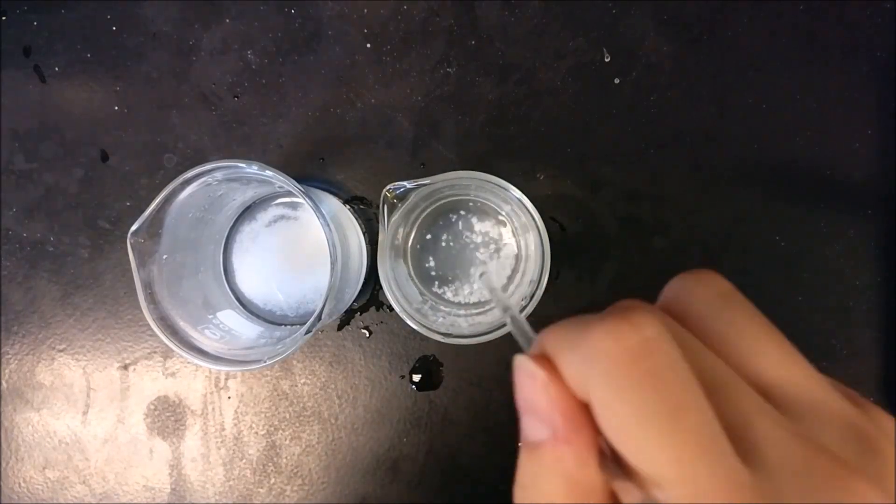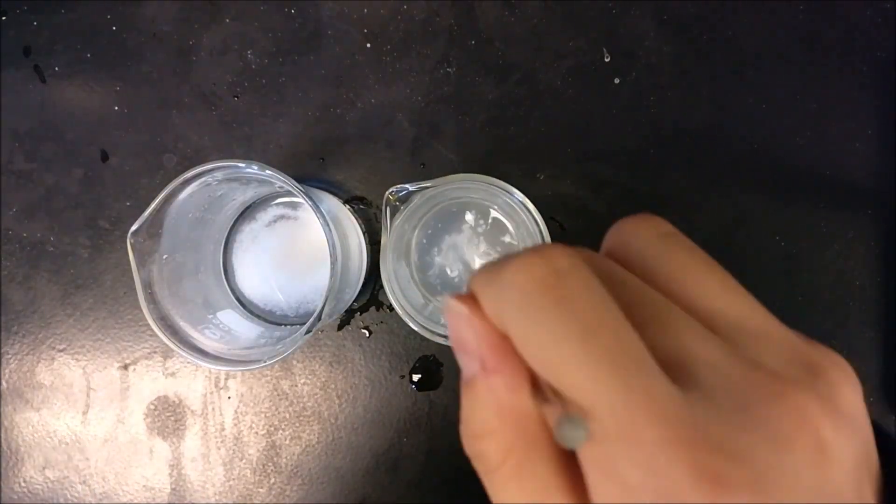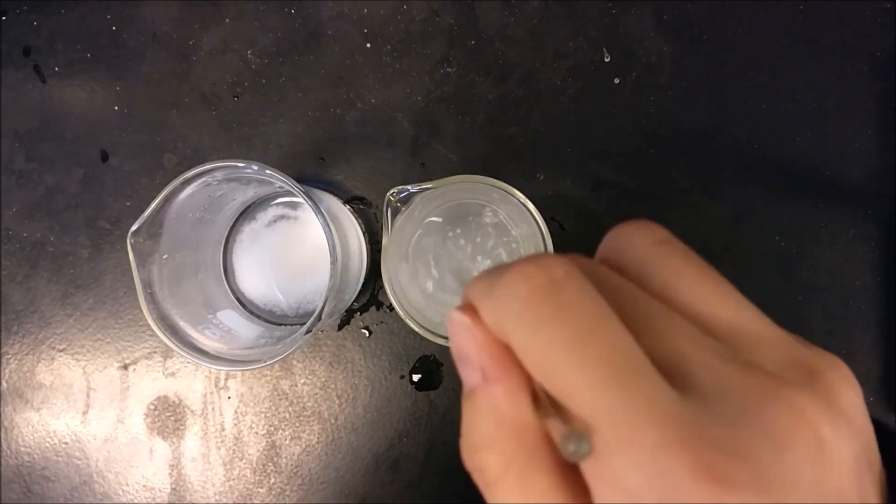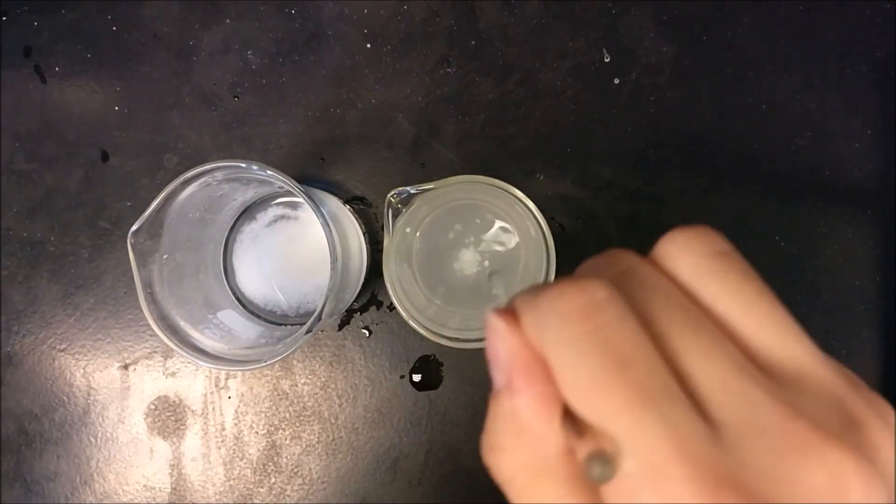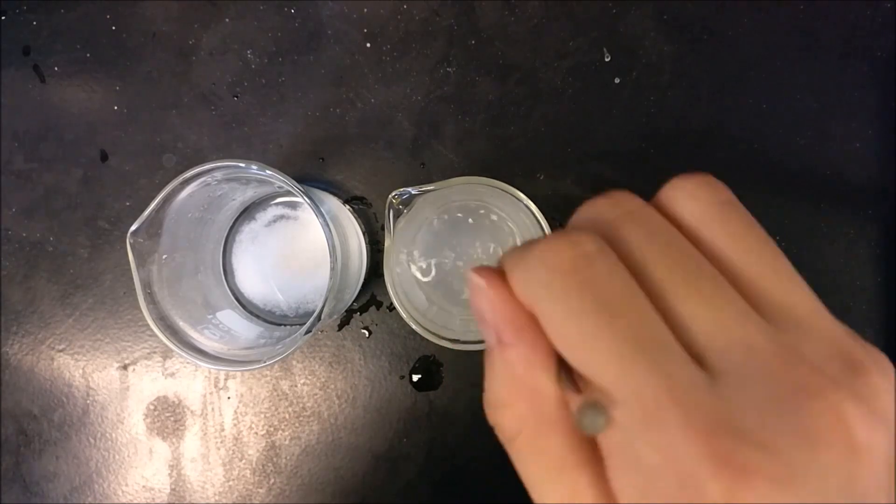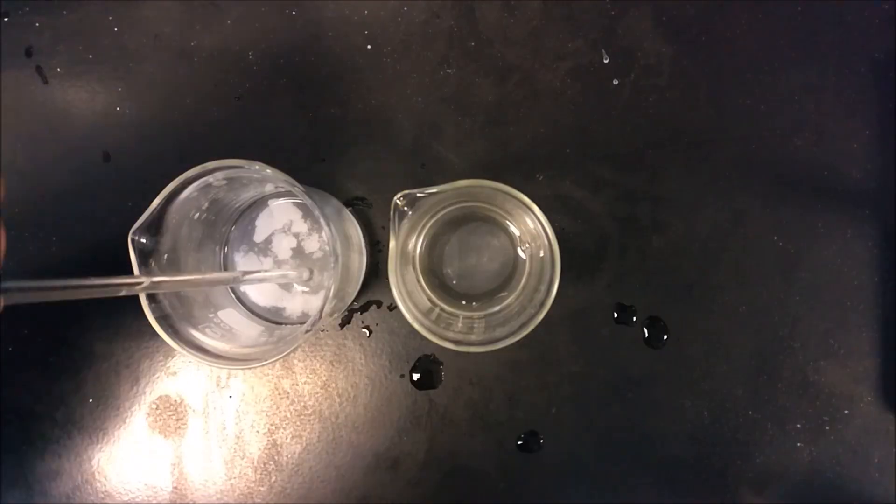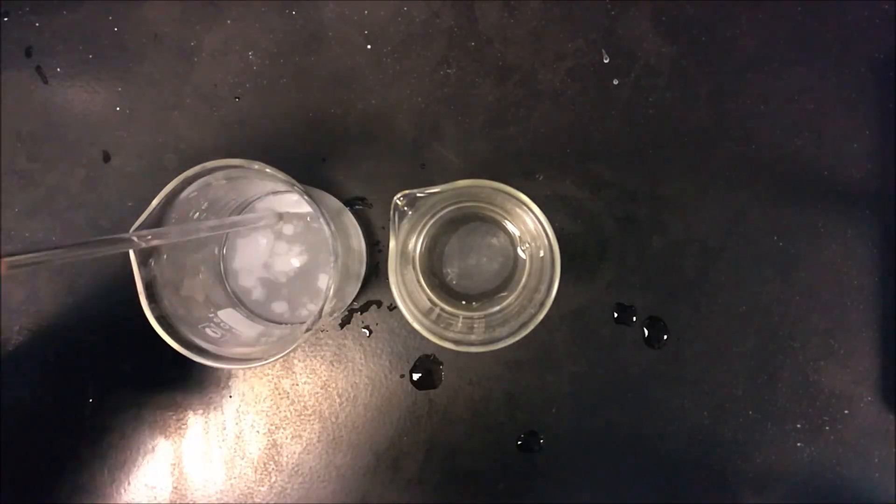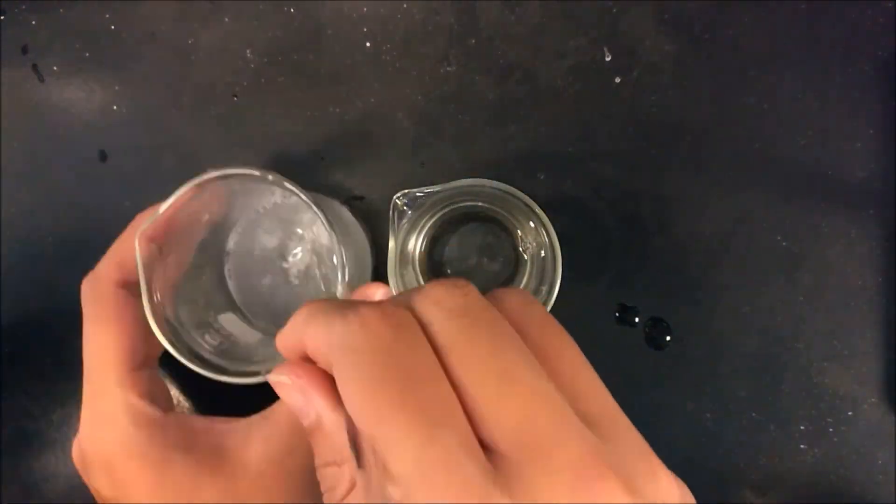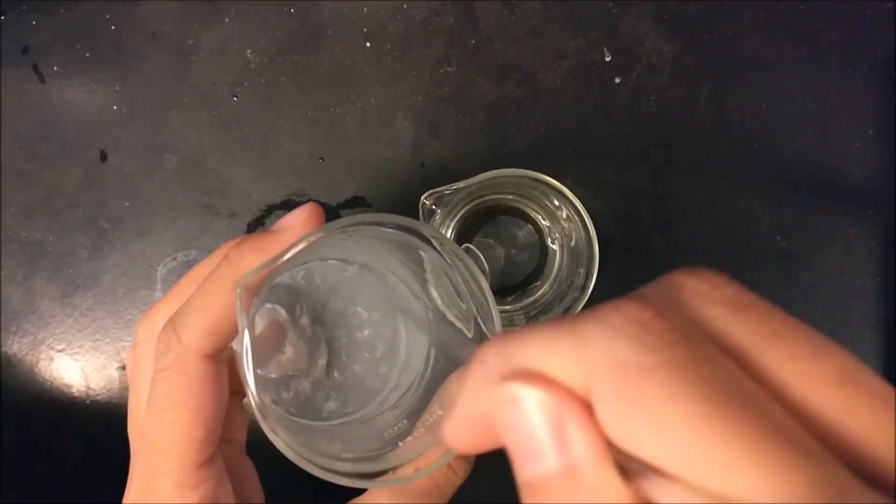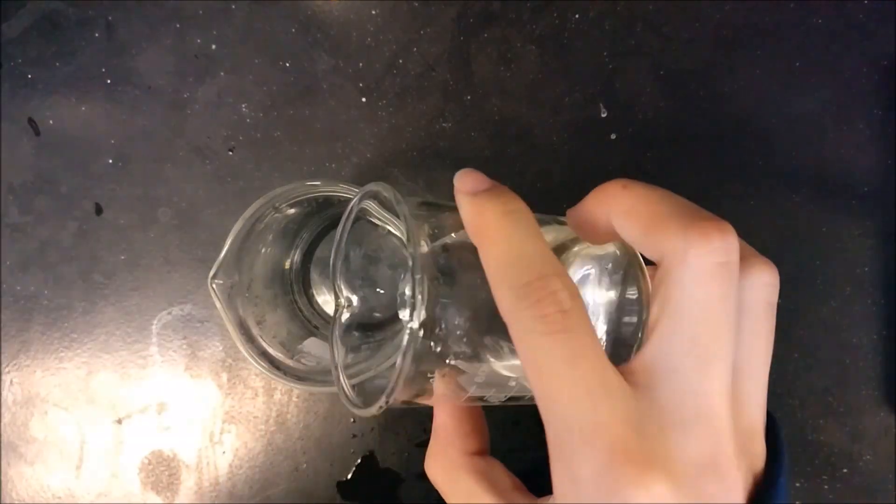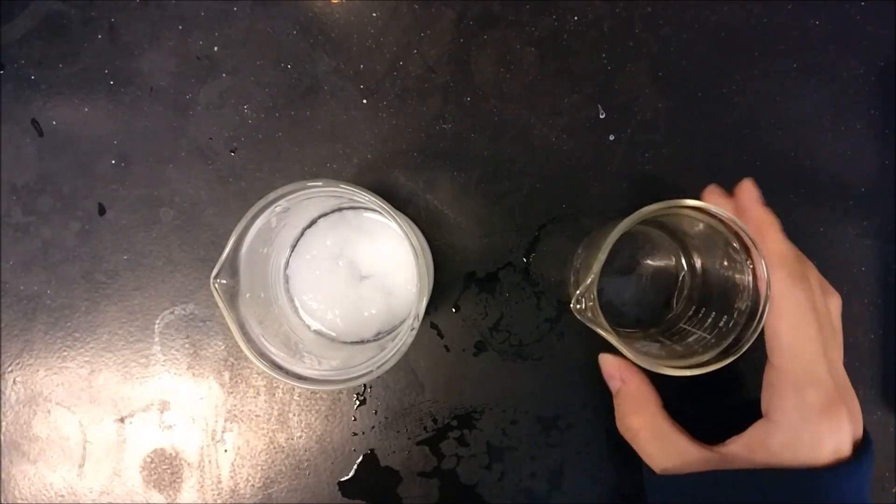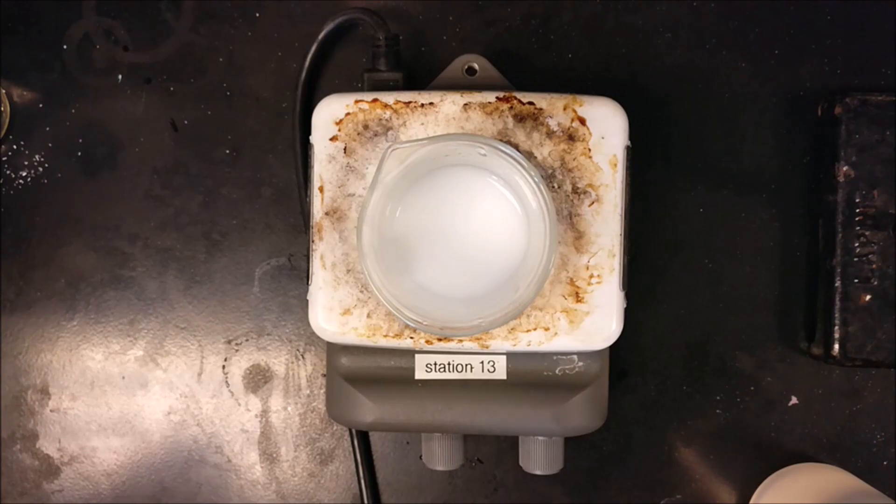Use a stirring rod to dissolve each solid in its beaker. If you think your partner is doing it too slowly, you can help them out. To mix the two solutions, pour one into the other. Put this beaker onto the hot plate for 2 minutes.